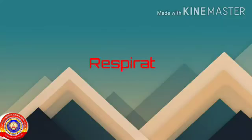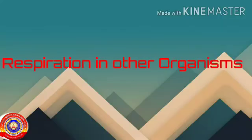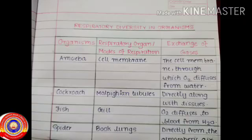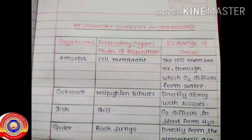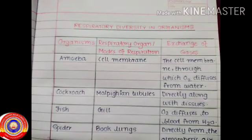Our next topic is respiration in other organisms. In amoeba, the respiratory organ is the cell membrane, and exchange of gases takes place through the cell membrane, through which oxygen diffuses from water. In cockroach, the respiratory organ is the Malpighian tubule, and gas exchange occurs indirectly along with tissues. In fish, the respiratory organ is the gill, where oxygen diffuses to blood from water.